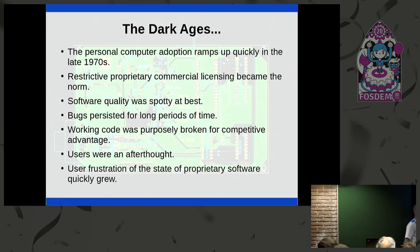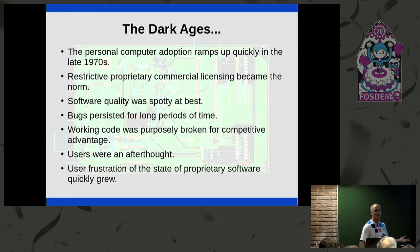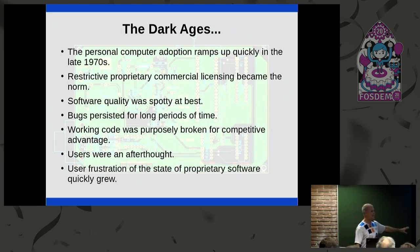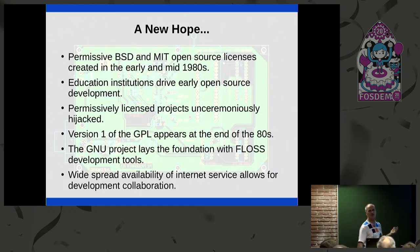Some of the things that also happened during this time that were not very nice: working applications were purposely broken for competitive advantage. If you know the history, you know who did those kinds of things. As a software user during this time, you kind of felt like you were just an afterthought — it didn't feel like they had your best interest at heart. So a large group of professional programmers were getting frustrated with proprietary software, and in 1980, the BSD released what we now know as the first truly open source license.